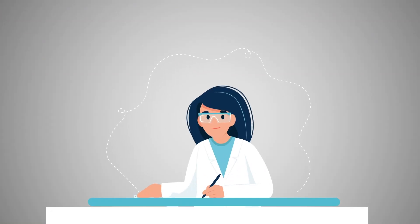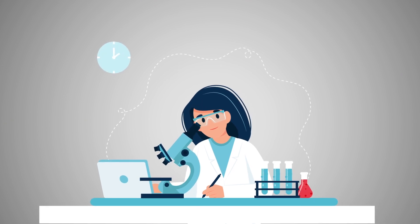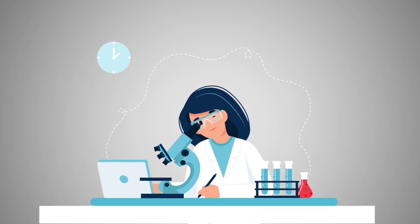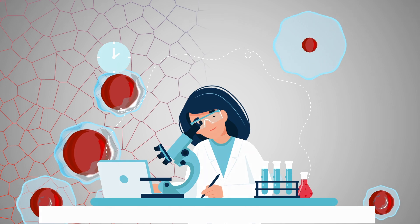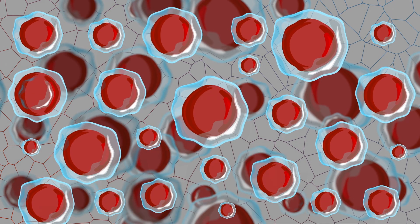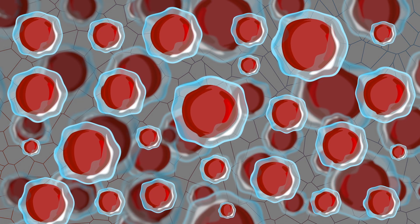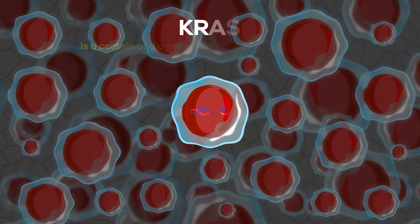Doctors study cancer cells to see what makes them different from healthy cells. They look at genes and proteins inside the cells. Cancer cells in different people with different cancers can have similar characteristics. The same genes or proteins may change or develop errors.